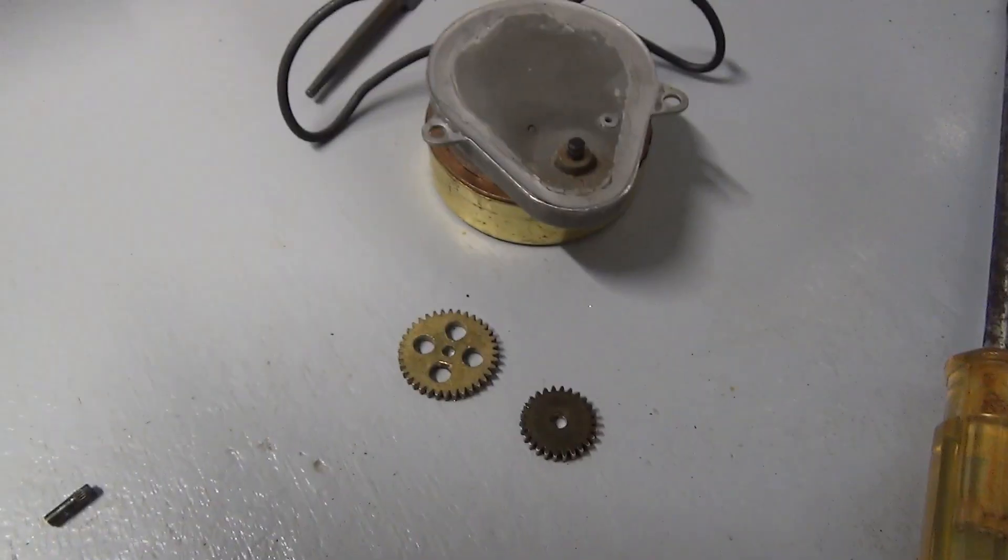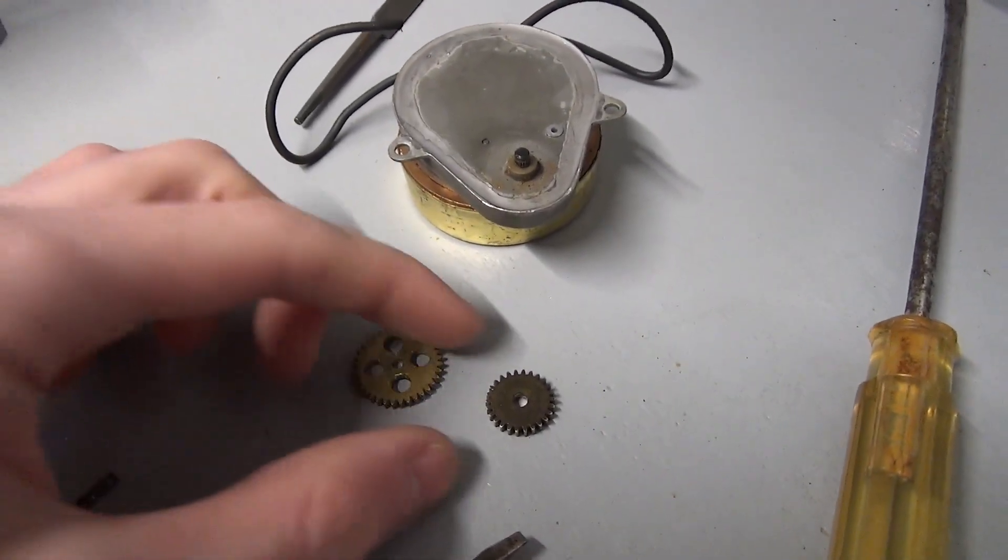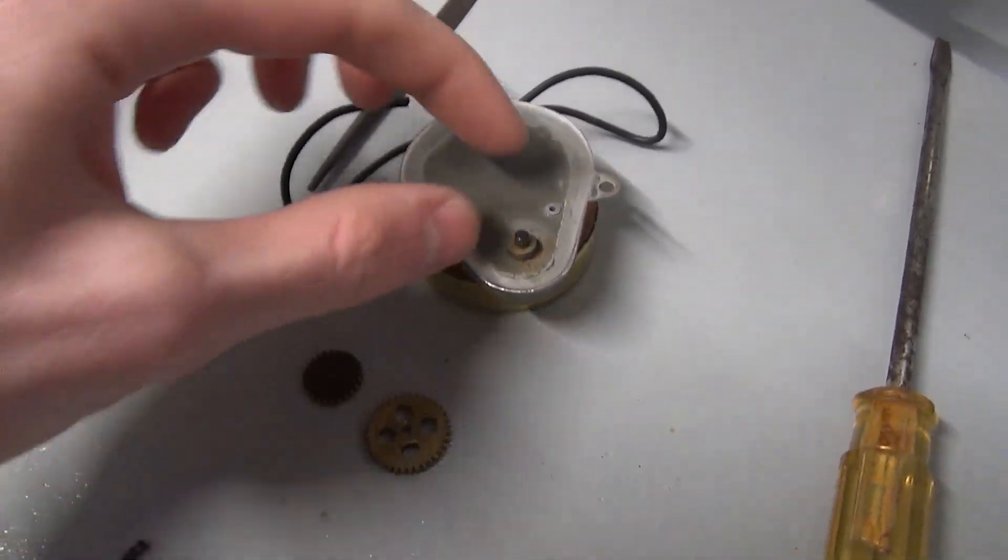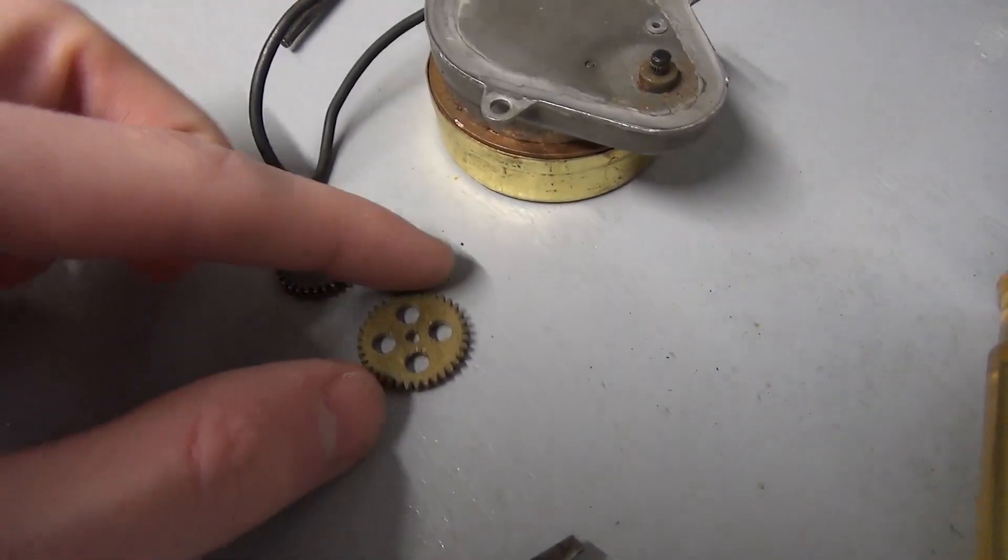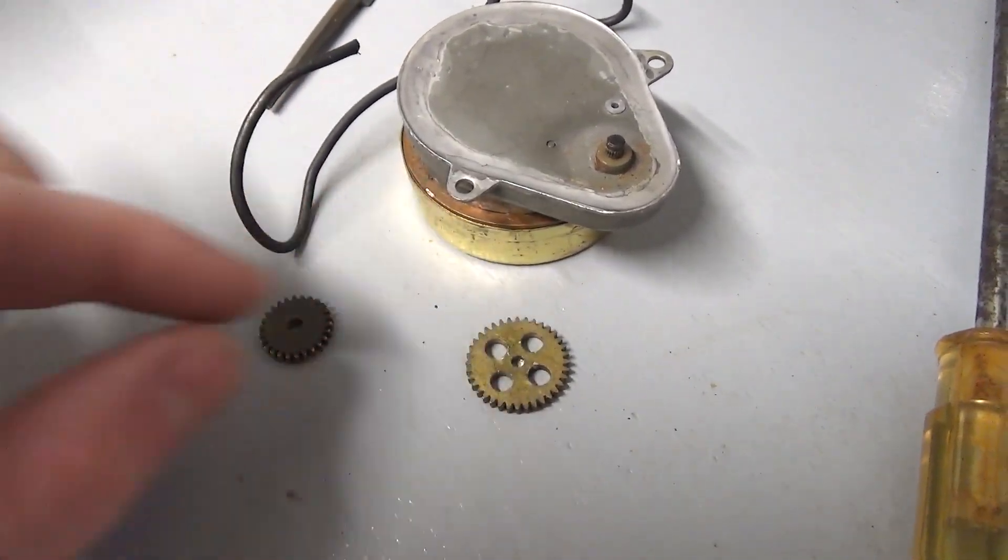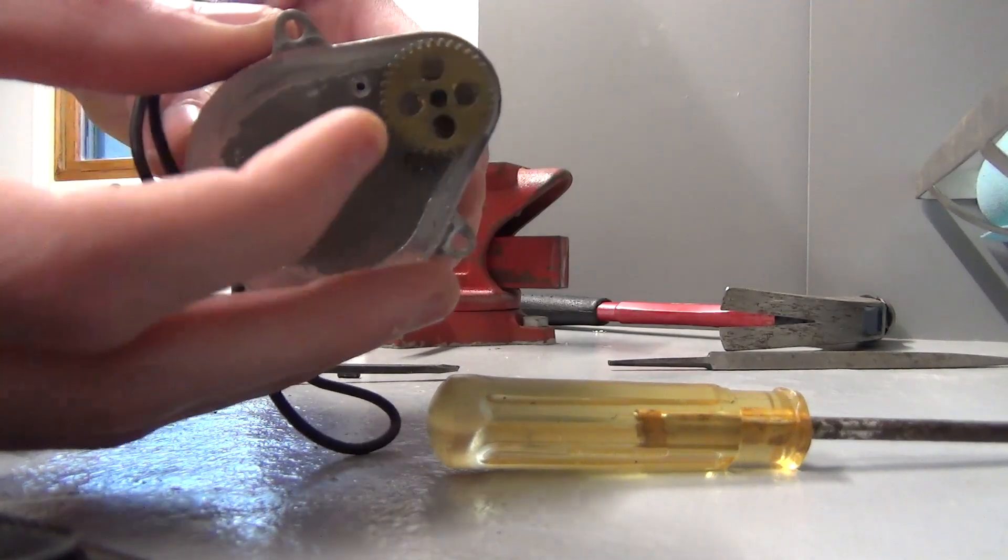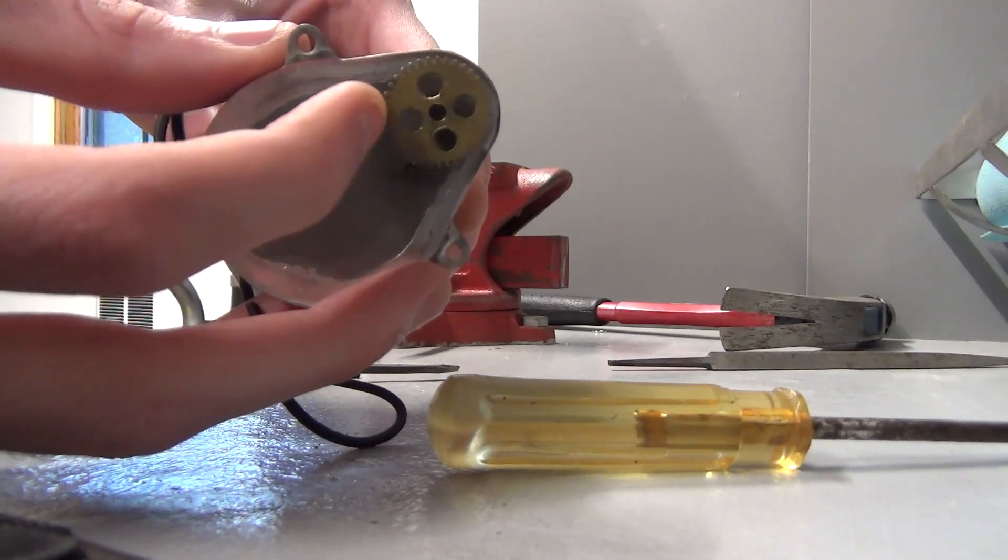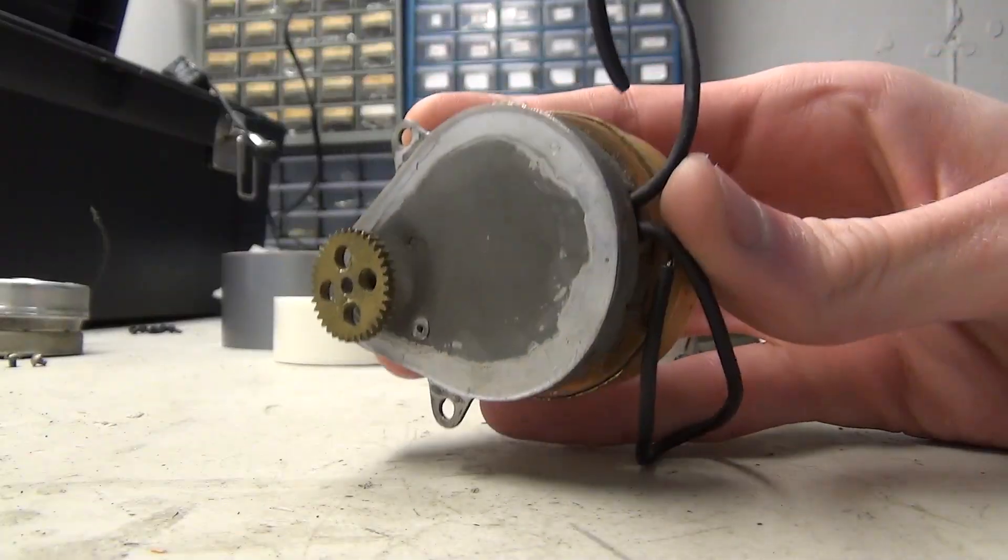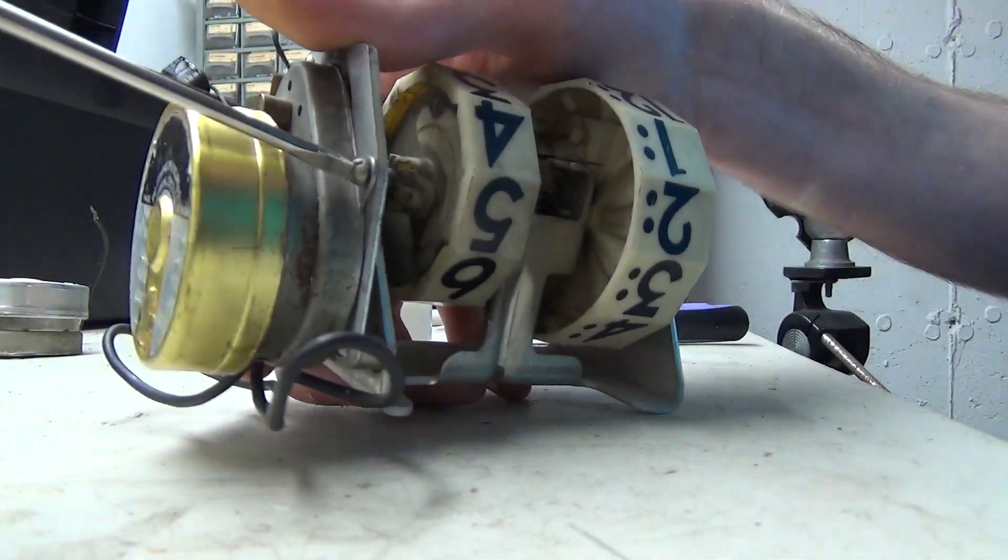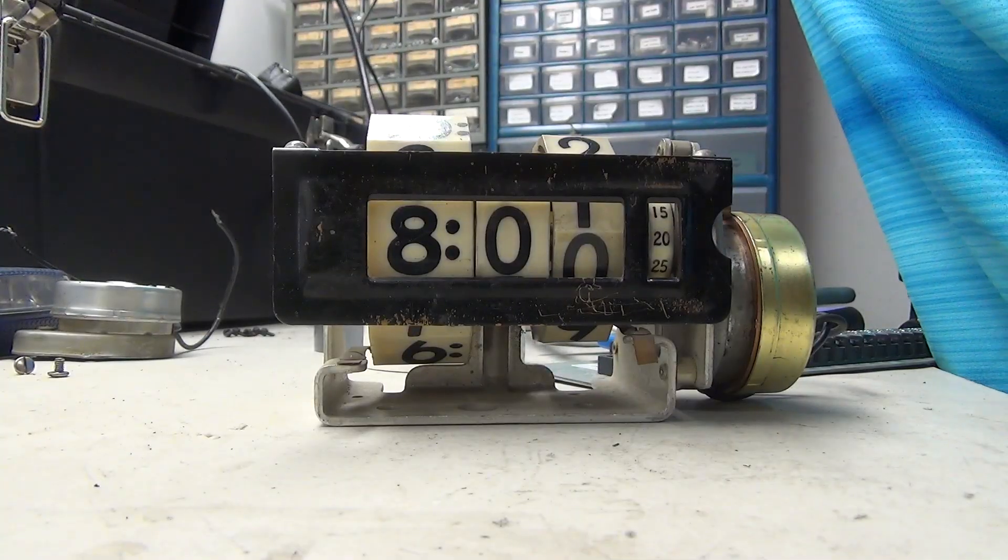However, there's a small problem. And that is the gear that's on the end of the old motor is a little bit different than the one that's on the new motor. And the motors have a different size shaft. Now, thankfully, I can pull these gears off and modify the original gear just a little bit so that it'll fit on the new motor. And once that's done, it's just a matter of putting the motor back onto the clock and powering it up and see if it works.